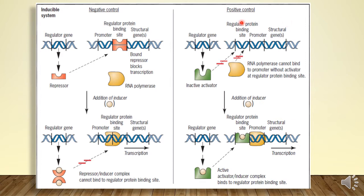In positive control, the regulator gene synthesizes an inactive activator — the activator molecule is synthesized but it is initially inactive. Because it is inactive, it cannot bind to the operator sequence, and RNA polymerase cannot bind to the promoter without an activator, so there is no transcription. When an inducer molecule is added, it binds to this inactive activator and activates it. The activator-inducer complex is capable of binding to the operator sequence, and ultimately the structural genes will be transcribed and the respective enzymes will be synthesized.